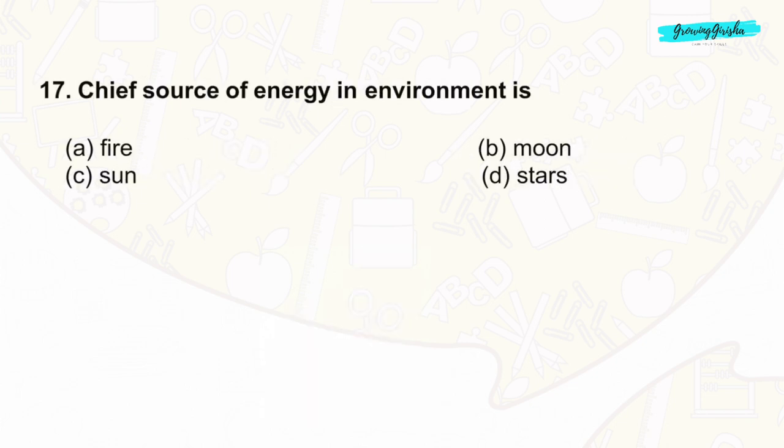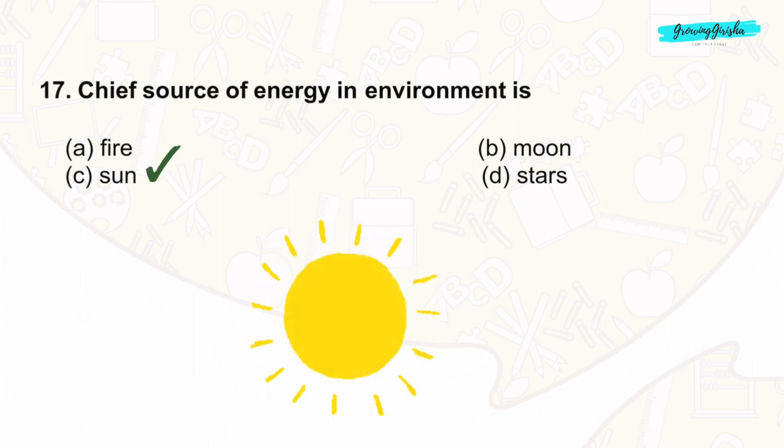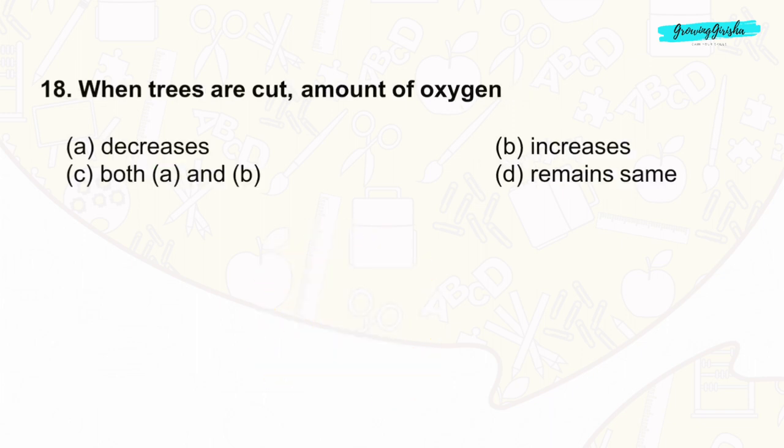Question 17: The chief source of energy in the environment is the Sun. The correct answer is option C: Sun.